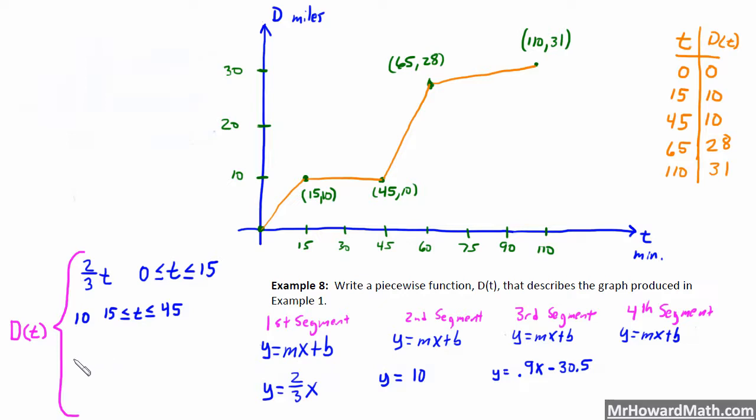So it's y equals, or d of t in this case, equals 0.9t. We're using t in place of x, minus 30.5. And that is good for a domain where t is less than or equal to 65, my rightmost point, and greater than or equal to 45, my leftmost point.